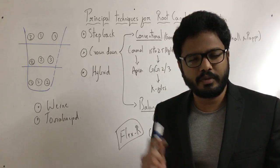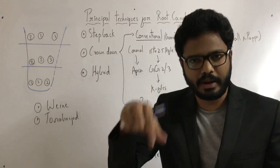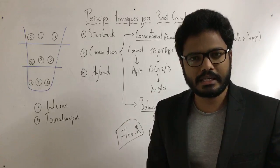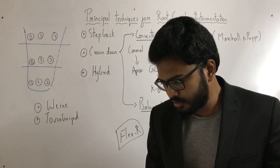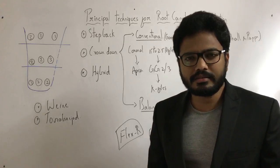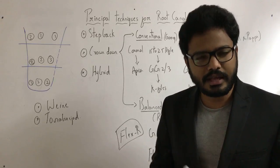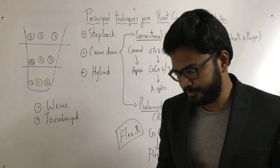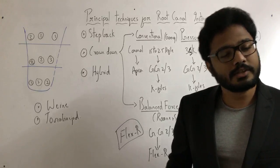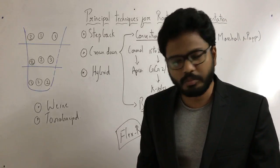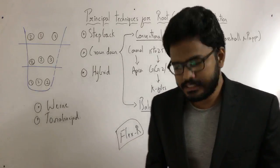For the balanced force technique: clockwise 90 degrees followed by counter-clockwise 180 to 270 degrees maintaining apical pressure. The master apical file is the largest file you place till working length. Crown-down is also called step-down technique — conventional crown-down is also called step-down technique.